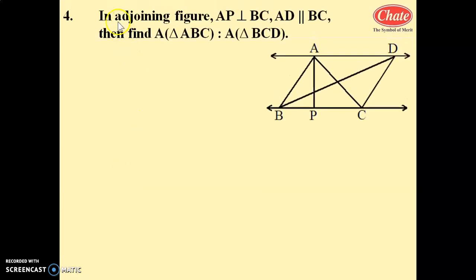Welcome back student. Now we will see the next question, question number 4 of practice set 1.1. In the adjoining figure, AP is perpendicular to BC, AD is parallel to BC. Find the area of triangle ABC to area of triangle BCD.